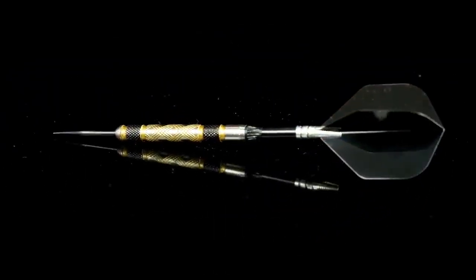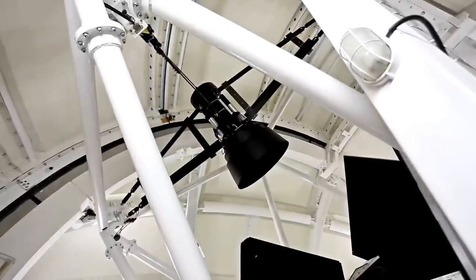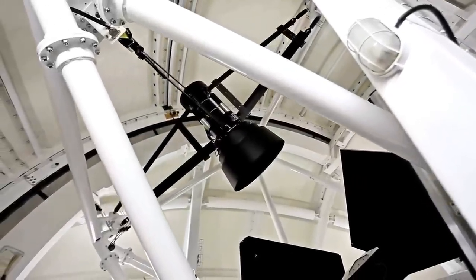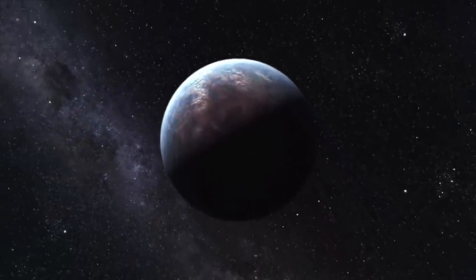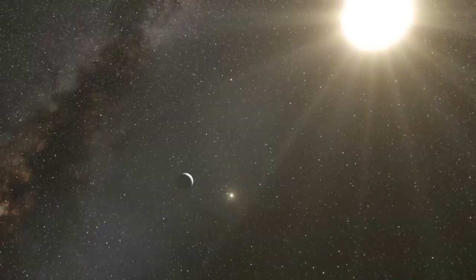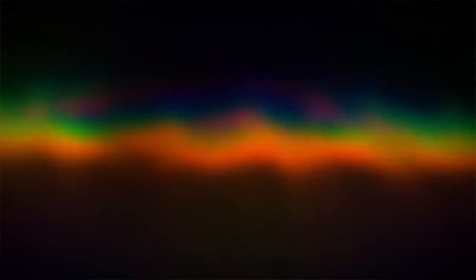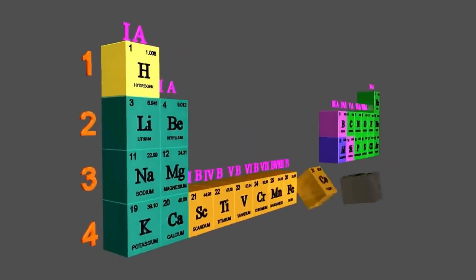Since then, the number of confirmed exoplanets has exploded. As of April 1, 2024, a total of 5,753 exoplanets had been discovered in 4,461 planetary systems, with 196 of these systems hosting multiple planets. Many of these discoveries are associated with M-type stars like Proxima Centauri, which are common throughout the Milky Way, but difficult to observe due to their faint brightness.